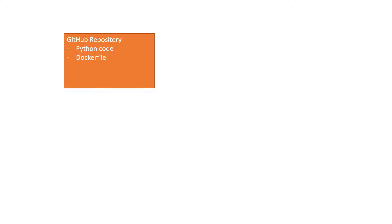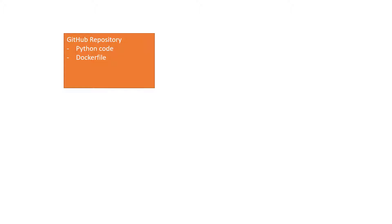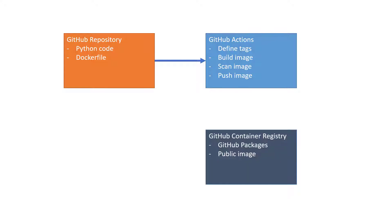We'll use the Dockerfile to build our image to run this code. To build the actual image, we'll use a GitHub workflow, which is comprised of several actions. We'll use actions to define the tags of our image, build it, scan it for vulnerabilities, and then push it. We'll run these actions when something changes in our repository — specifically when a commit happens to the main branch.